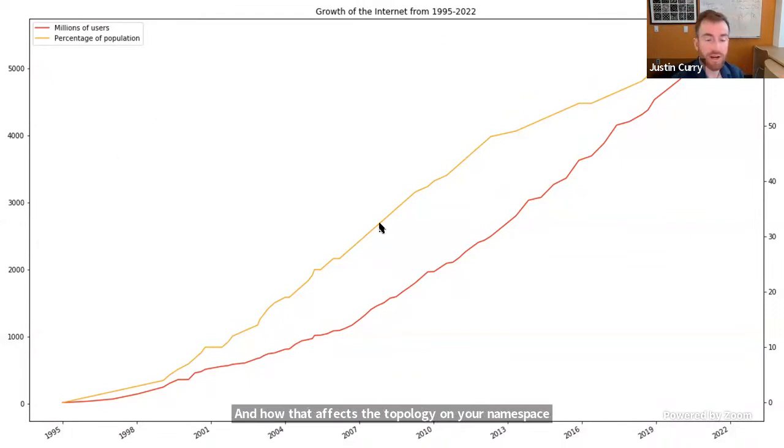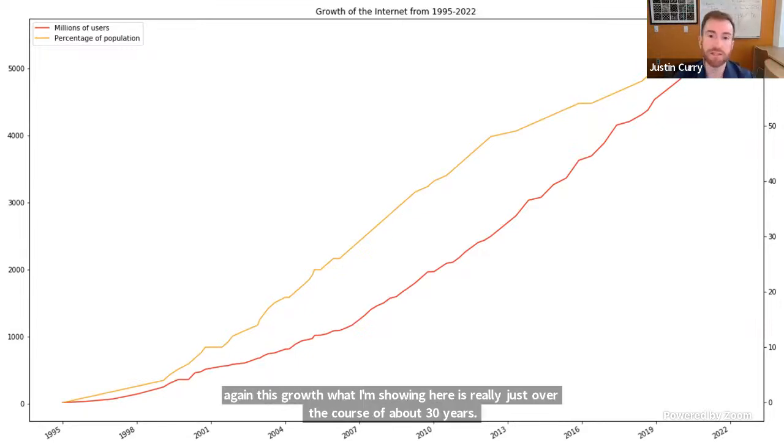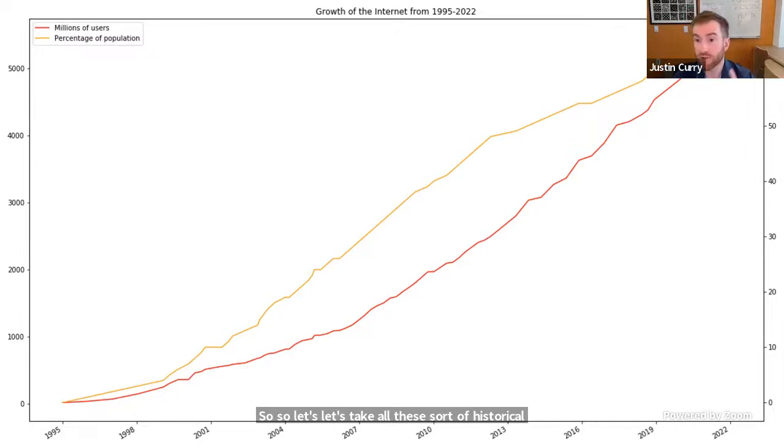But, you know, as everyone here is aware, all these early lessons and how the internet developed has had this huge explosion over the past 50 years. And here we can already see that around 2008 with the introduction of the iPhone, the number of nodes on the system really started to take off. And so nowadays we have well over 5 billion nodes on the internet. And again, this growth, what I'm showing here is really just over the course of about 30 years. So let's take all of these sort of historical lessons in mind as we move to space internet.